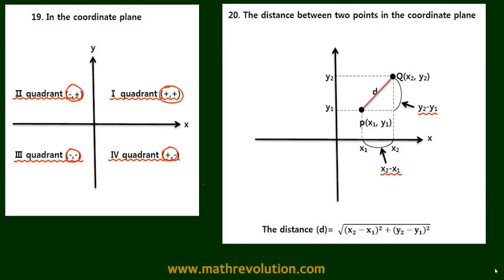So we can use the Pythagorean theorem now to get the distance d. So we know that d squared equals x2 minus x1 squared, plus y2 minus y1 squared.